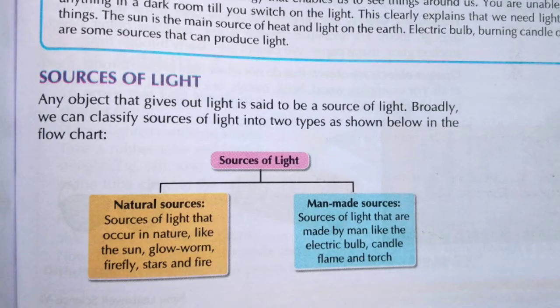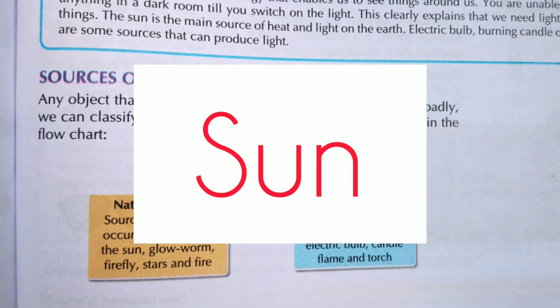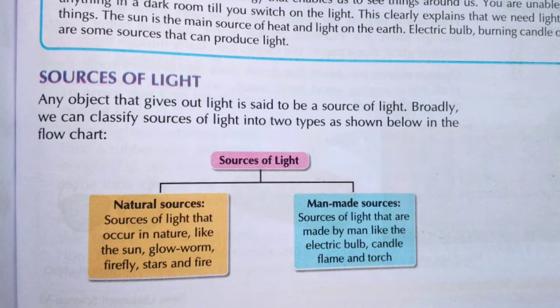The main source of heat and light on the earth is our sun. There are also man-made sources like electric bulb, burning candle, and torch. Any object that gives out light is said to be a source of light. Sources of light can be classified into two types: natural sources and man-made sources. Natural sources are those that occur in nature, like the sun, stars, fire, firefly, and jellyfish.